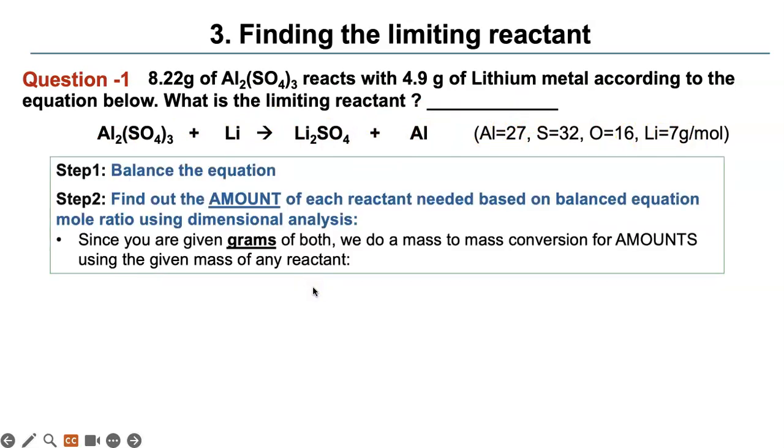The first step you do is balance the equation. Next step, you can find the amount. In stoichiometry, amount can be moles, particles, masses, or volumes. So here we are dealing with grams and grams. You're going to find the gram amount of each reactant needed based on the balanced equation mole ratio of these two. So we'll have to balance it. And dimensional analysis. So let's do the balancing first. So the mole ratio is 1 to 6 to 3 to 2.